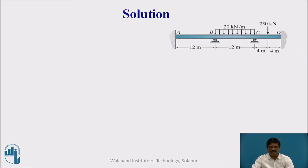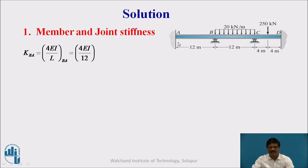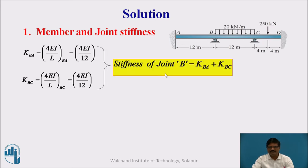First of all we need to calculate the stiffnesses of members and joints. We have two interior joints: joint B and joint C. For joint B, two members meet there — BA and BC. The stiffness of BA will be 4EI/L since the opposite end is fixed, and the stiffness of BC is also 4EI/L since it is a continuous support. The stiffness of joint B is the summation of the stiffnesses of members BA and BC, as shown here.